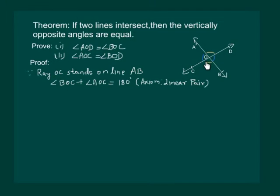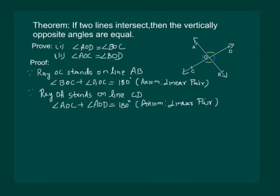Now consider line CD. Then OA is a ray on it. Then again by the same axiom, angle AOC and angle AOD will make a linear pair. And we can write that sum of these angles is 180 degrees by the axiom of linear pair. Let us mark the first equality as 1 and second one as 2.